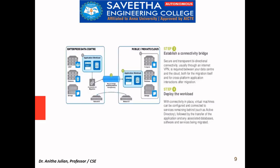In the fourth step, we are deploying the workload. The entire workload from the data center, as you can see in the diagram, has been sent to the public and private cloud. With connectivity in place, all the virtual machines can be configured and connected to the services in the private or public cloud. So we are migrating or shifting the resources to our usage.